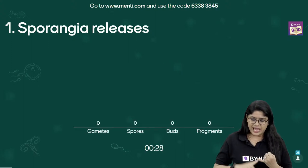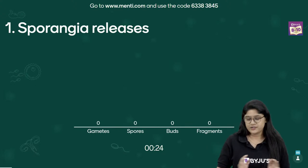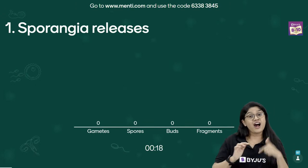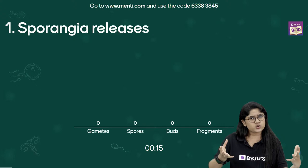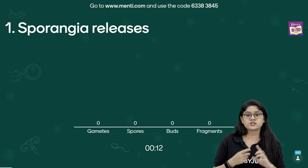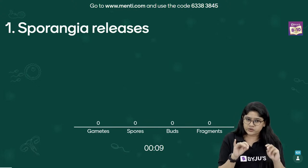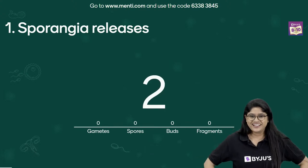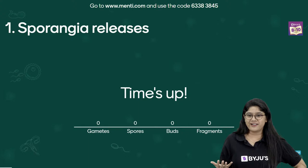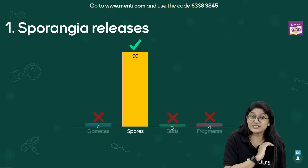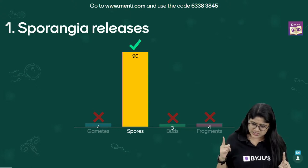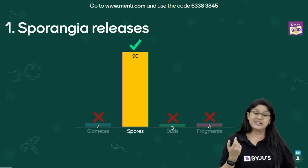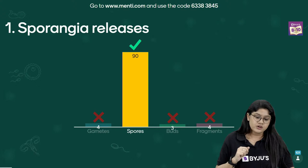Question number one: Sporangia releases — gametes, spores, birds, or fragments? Such an easy question! You have 30 seconds to vote. Remember, the faster you vote the more points you get. 90% of you are saying spores — absolutely correct! Four voted gametes, three voted birds, and four voted fragments. The correct answer is spores.